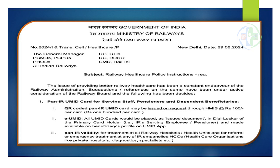The EUMIT digital card is a PAN IR valid card available through DigiLocker. By paying Rs. 100 per beneficiary, you can generate this card and have it securely stored in your DigiLocker account.